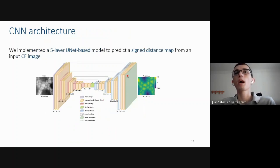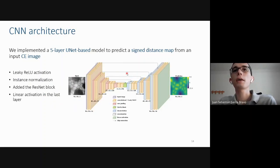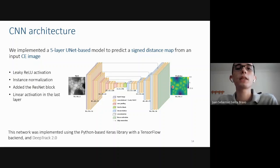About the architecture, we implemented a five-layer U-Net based model to predict a signed distance map from an input cornea endothelium image. The main differences between the commonly used U-Net and our method is that we use a leaky ReLU as activation function followed by instance normalization in each convolution block. We added a ResNet block in the downmost layer, and in the last layer, linear activation was used to obtain the final signed distance map. This network was implemented using the Python-based Keras library with a TensorFlow plugin and PyTorch 2.0.